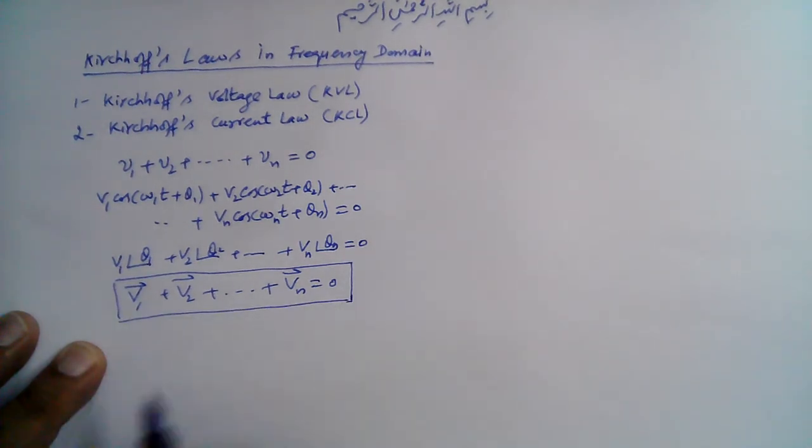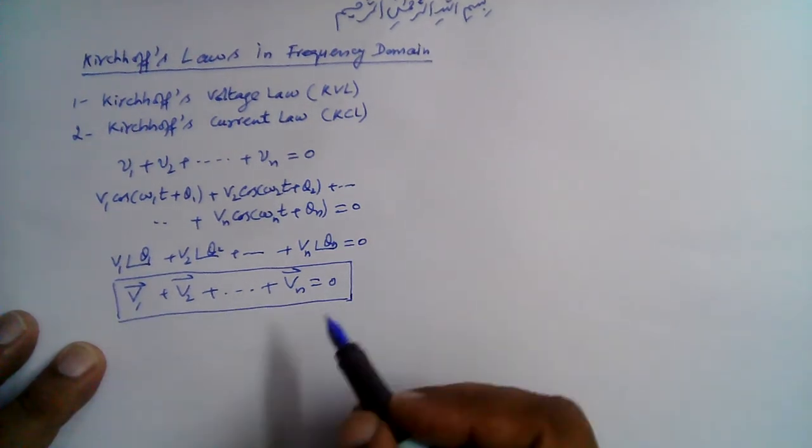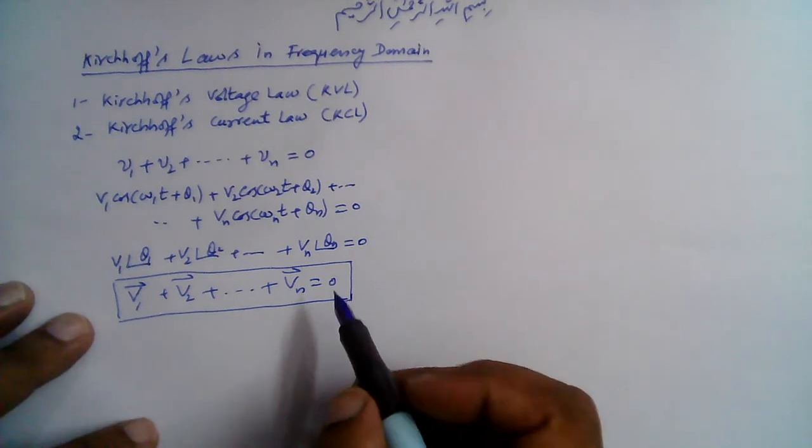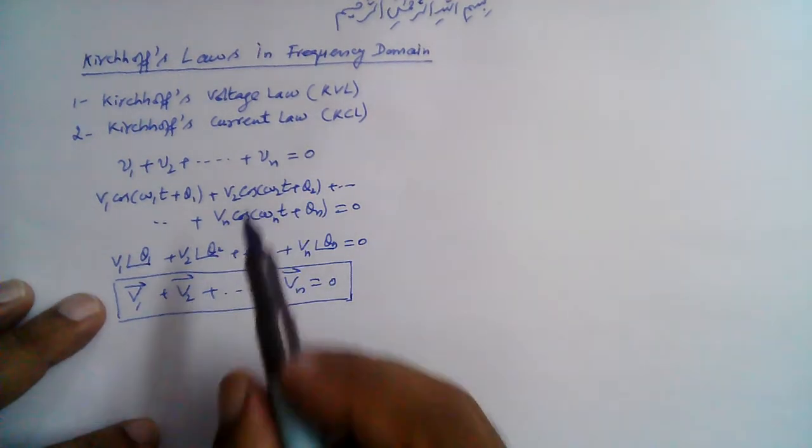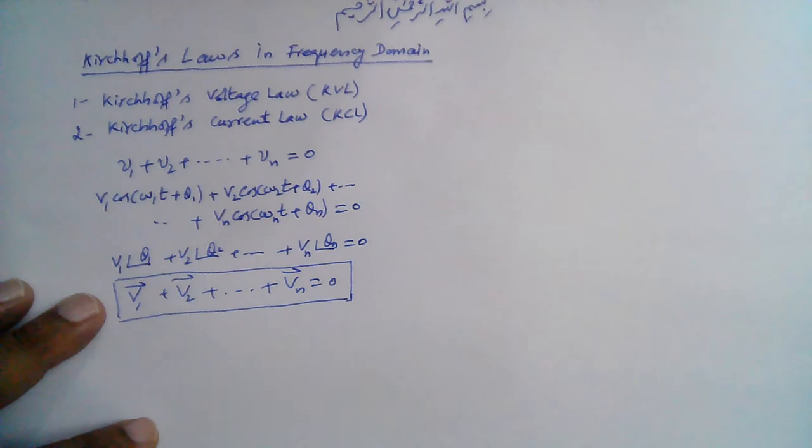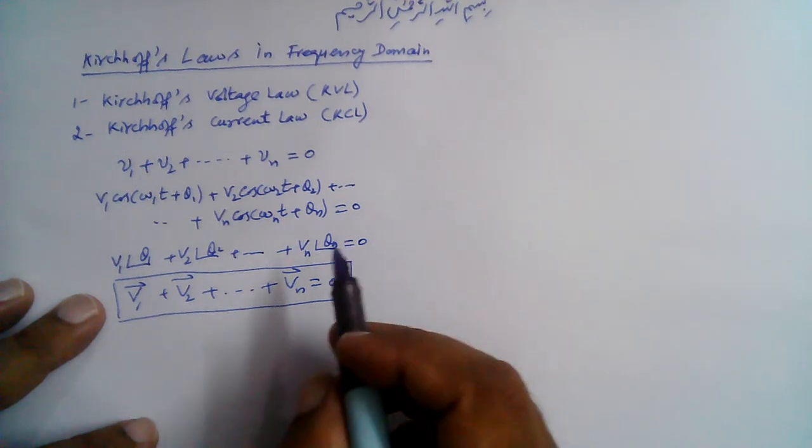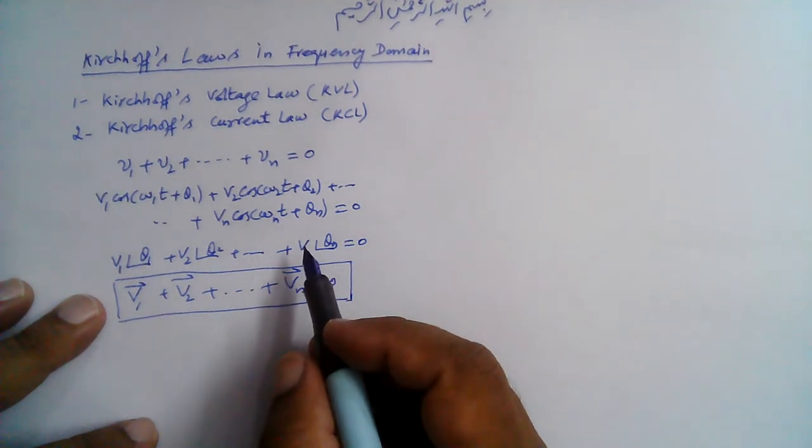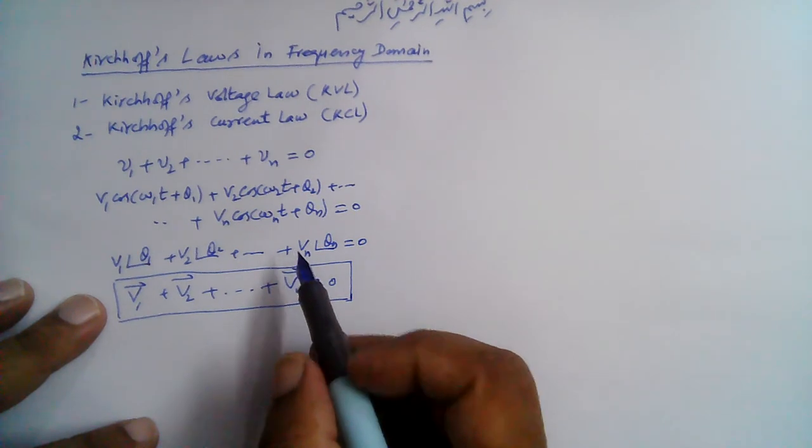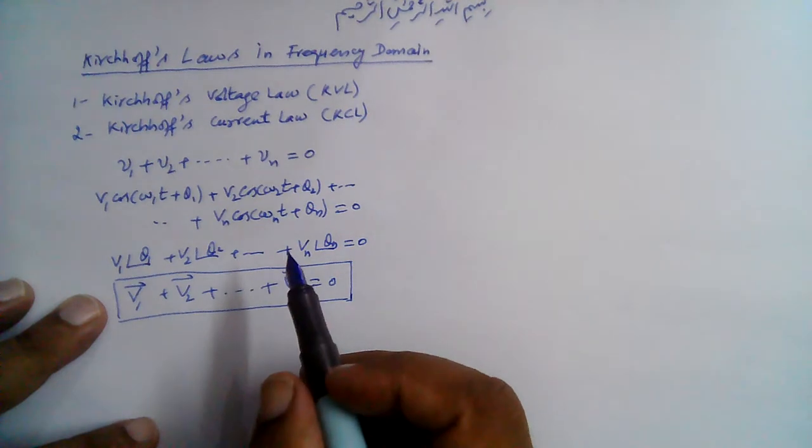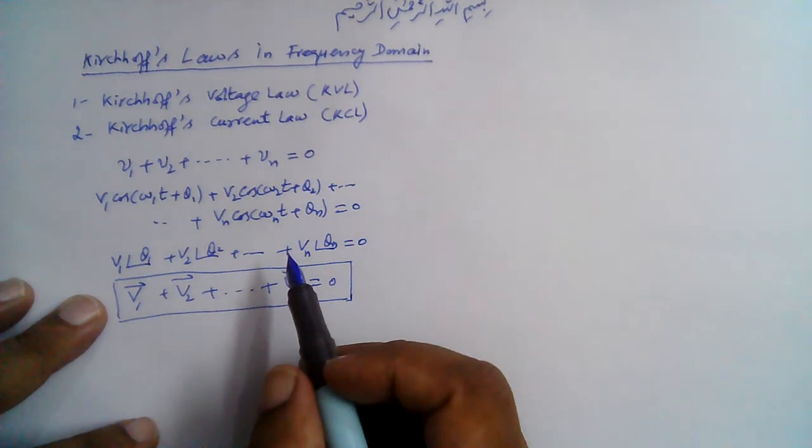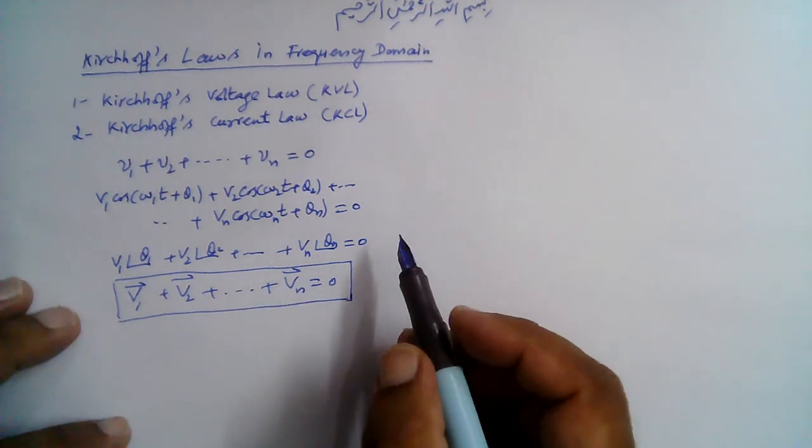...Voltage Law in the phasor or frequency domain is the same as Kirchhoff's law in the time domain. Similarly, according to Kirchhoff's Current Law, the sum of currents entering a node equals the sum of currents leaving the node, or the sum of all currents entering or leaving the node is zero.